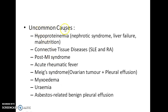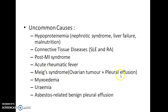The uncommon causes of pleural effusion are hypoproteinemia due to nephrotic syndrome, liver failure, or malnutrition; connective tissue diseases like systemic lupus erythematosus and rheumatoid arthritis; post-myocardial infarction syndrome; acute rheumatic fever; Meigs syndrome (ovarian tumor plus pleural effusion); myxedema; uremia; and asbestos-related benign pleural effusion.